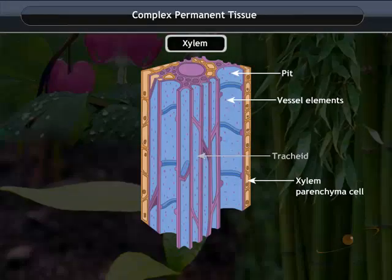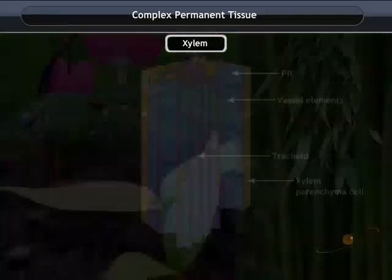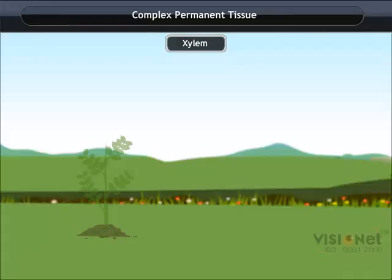Tracheids are tubular in structure and allow the transport of water and minerals vertically through them. Xylem fibers are mainly supportive in function.